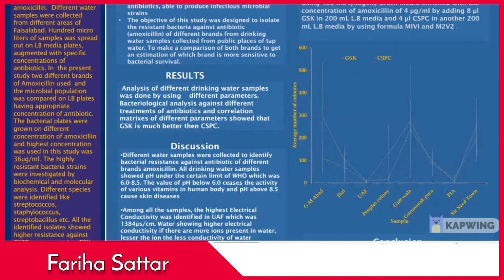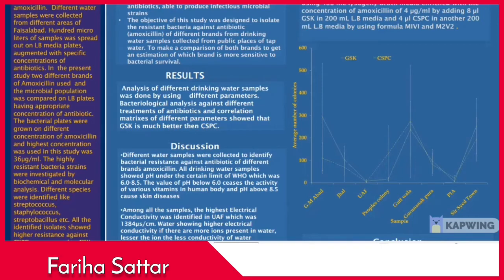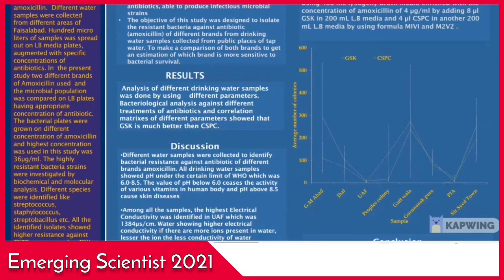For this purpose, different water samples were collected from different areas of Islamabad, and 100 microliters of sample was spread onto agar media plates augmented with specific concentrations of antibiotics. In the present study, two different brands of amoxicillin were used, and the microbial population was compared on agar media plates having appropriate concentrations of antibiotics. Bacterial plates were grown on different concentrations of amoxicillin, with the highest concentration used in this study being 36 micrograms per mL.